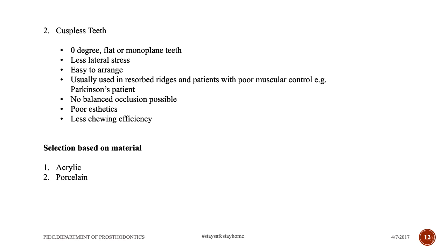Cuspless teeth are used in patients with poor muscular control, such as Parkinson's patients, because the jaw keeps moving and a specific bite cannot be given. Cusp angulation is 0 degrees — also called monoplane or flat teeth. Lateral stresses are less and arrangement is easier. However, balanced occlusion is not possible, and they provide poor aesthetics and less chewing efficiency.